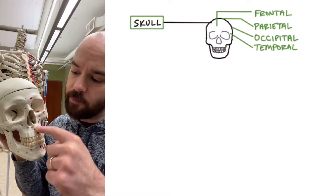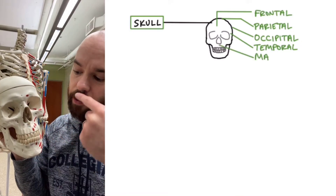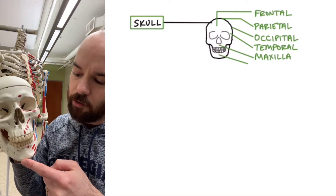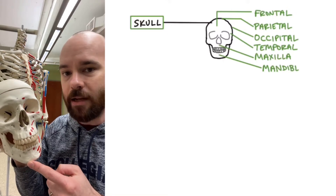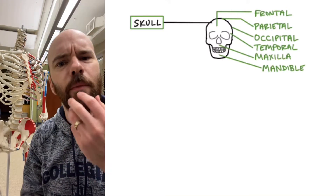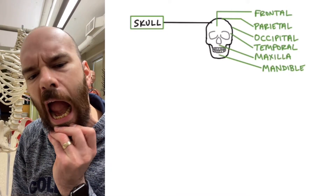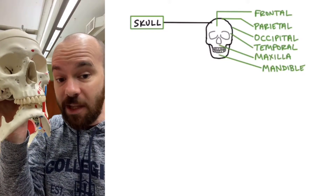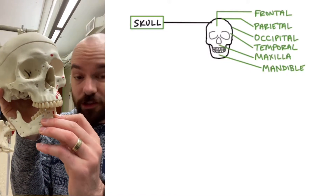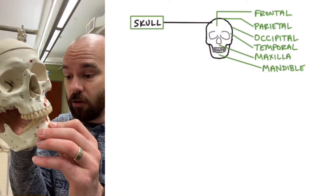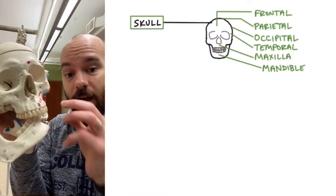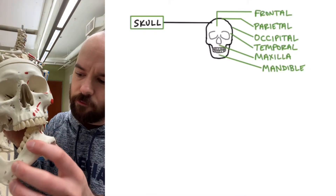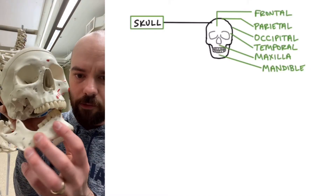Two more parts of the skull. This part right here that's superior to your mouth is called the maxilla, and down here we have the mandible. Go ahead and take a moment and stretch your mandible out. The mandible is actually not really attached to the rest of the skull except by the joint in the jaw right there, so it's able to move freely from the rest of the skull.